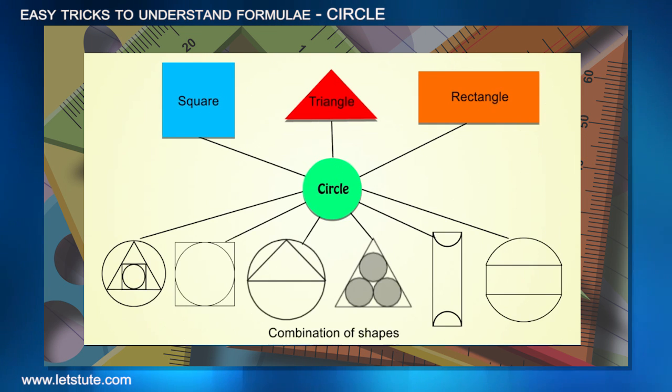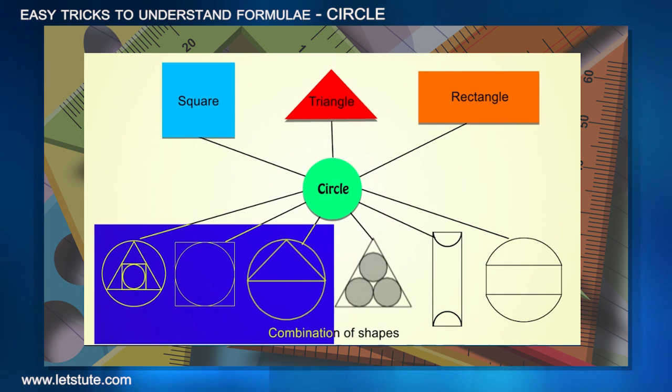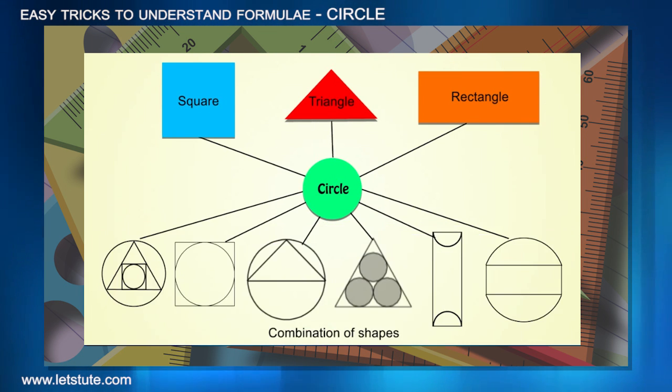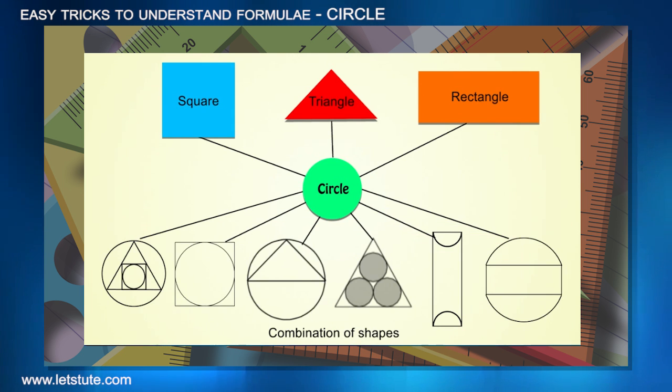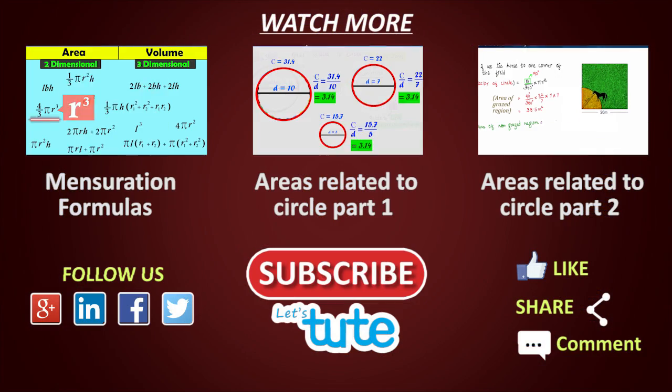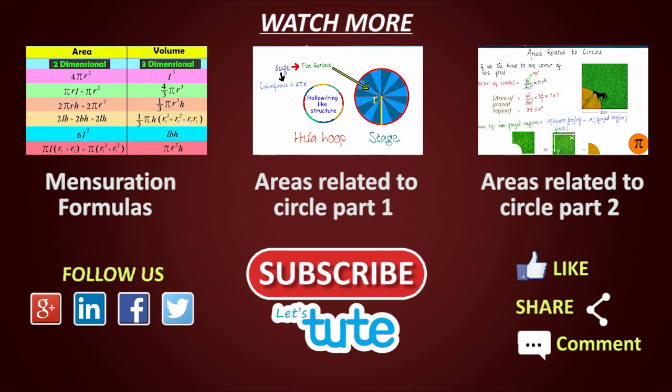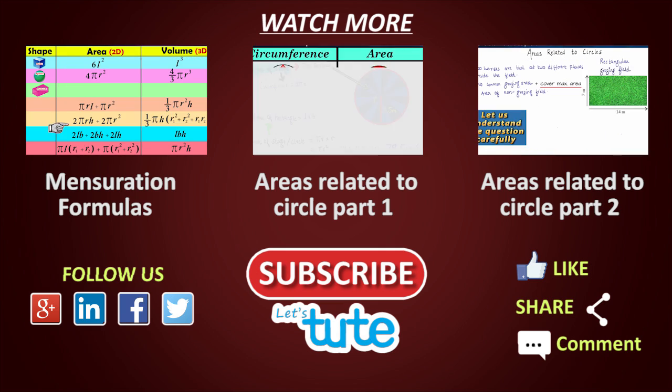These are certain examples. You can get a variety of such combinations of shapes. The most important and basic tip is that we need to identify the basic shapes like a square, rectangle, triangle, circle, or various parts of a circle. If you need help with formulas for surface area and volumes, do watch our video. That's all for this session. Have a great day, thank you, and keep watching and keep learning.